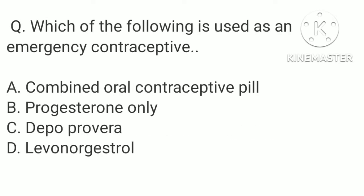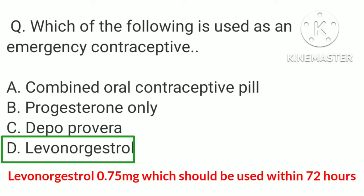Which of the following is used as an emergency contraceptive? a. Combined oral contraceptive pill, b. Progesterone only, c. Depoprovera, d. Levonorgestrel. The correct answer is d. Levonorgestrel. The emergency contraceptive pill, also known as the morning after pill, contains levonorgestrel, which should be used within 72 hours of unprotected intercourse.